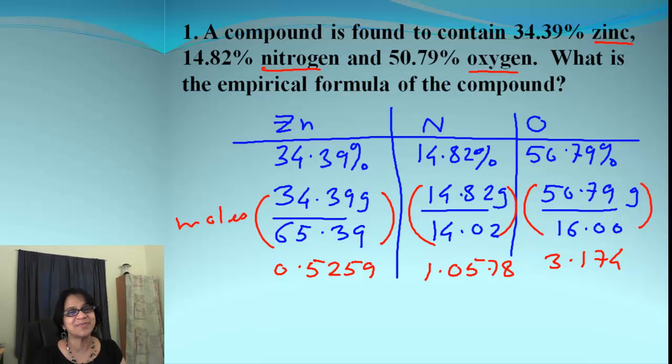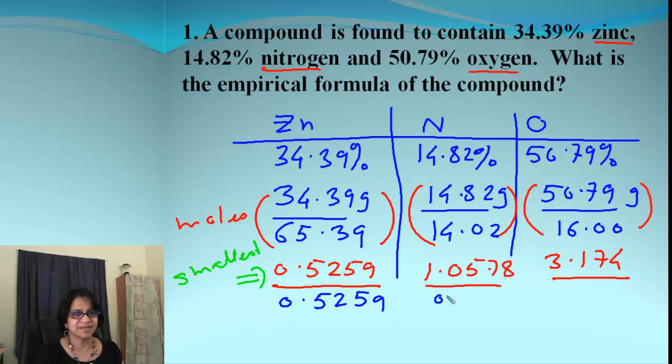Okay. After we go percent to the mass and mass to the mole, divide by the smallest. We got 3 numbers and out of these which is the smallest number. This is the smallest number. So we are going to divide by that smallest number. And then of course simplify again.